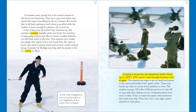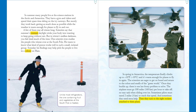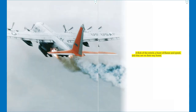In spring in Antarctica, the temperature finally climbs up to 10 degrees Fahrenheit or negative 10 degrees Celsius, and it's warm enough for planes to fly in again. The scientists are eager to get on board and return to the colors and smells of the green world. Once they buckle up, there is one last frosty problem to solve — the airplane must go 100 miles or 160 kilometers per hour to take off, no easy task when sliding over ice. Sometimes pilots must travel two miles or three kilometers to reach that speed, and sometimes they need extra help — then they turn to the eight rockets attached to their plane. A flick of the switch, a burst of flames and speed, and they are on their way home.